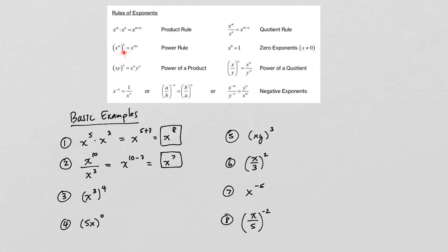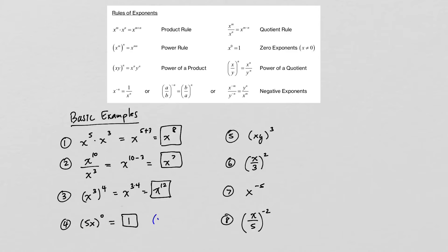Next up is an example of the power rule. If you have an exponential expression raised to a power, we multiply the powers together, so this becomes x to the 3 times 4, which is x to the 12. For number four, we have the quantity (5x) all raised to the zero power. The easiest way is to say it's equal to 1, because anything to the zero power is 1. We make the assumption that x is not zero, because if x is zero, then you have zero to the zero, and that's undefined.